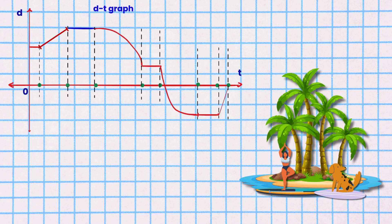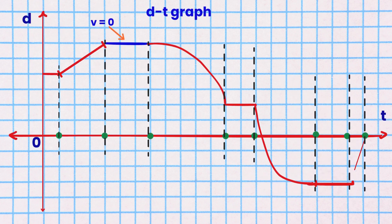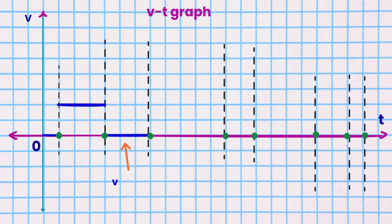Segment 3. Mole and Electron relax on Island A for some time. They have zero velocity. Their zero velocity is shown as a horizontal line on the time axis.